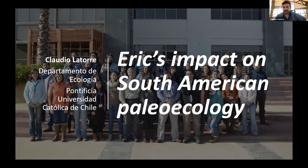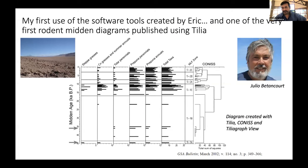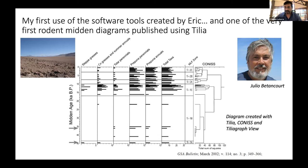This is a Tilia diagram, which probably all of you are very familiar with. What you're seeing here is actually sort of historical now — a diagram that was almost published 20 years ago, part of a paper from my PhD thesis. At that time I was working in the Atacama Desert, collecting rodent middens — studies pioneered in the southwestern US to look at paleontological change in arid landscapes. Julio Betancourt is one of the main proponents of this line of research, and he was on my advising committee.